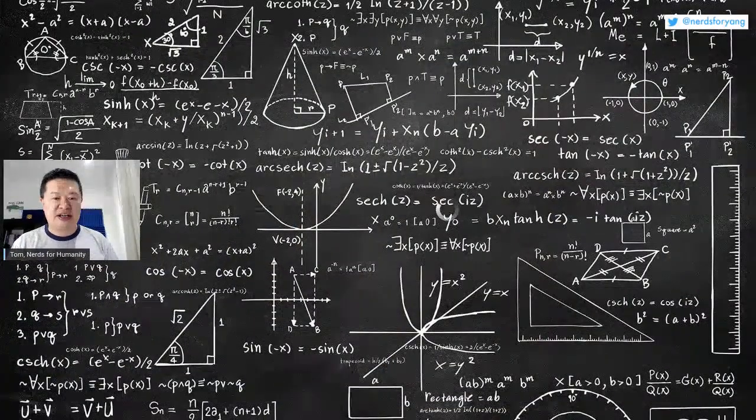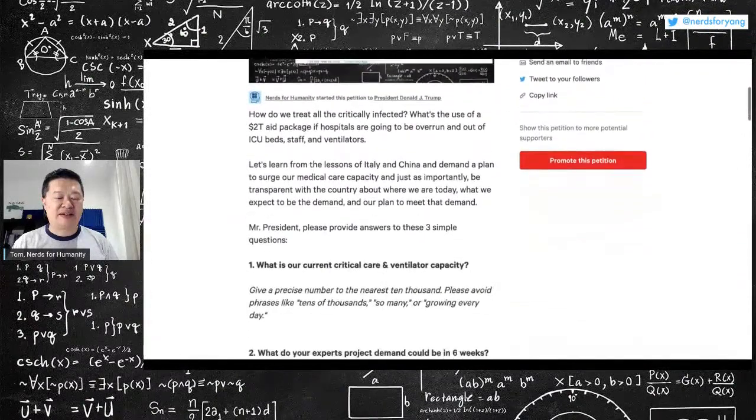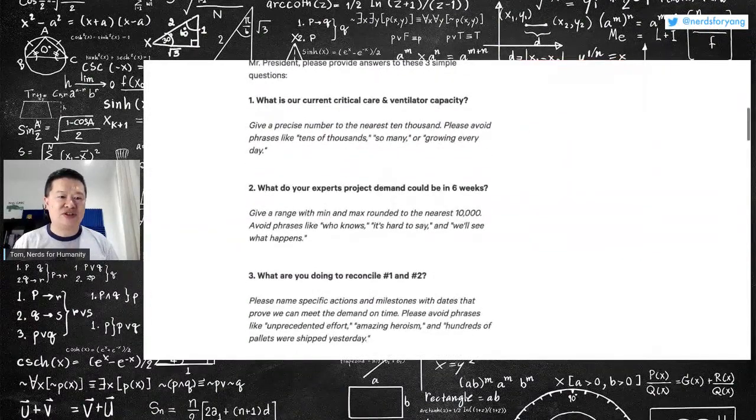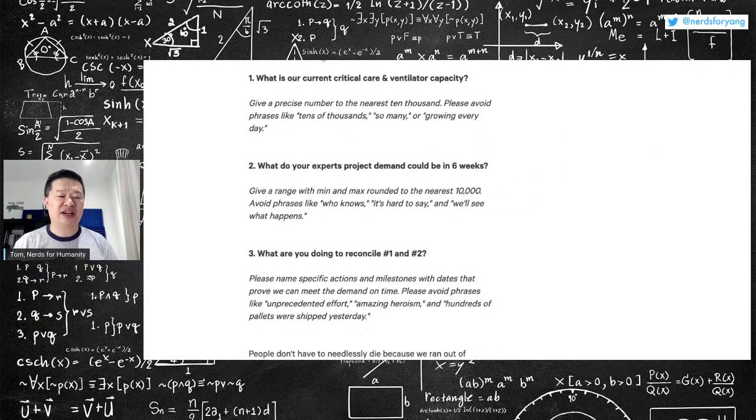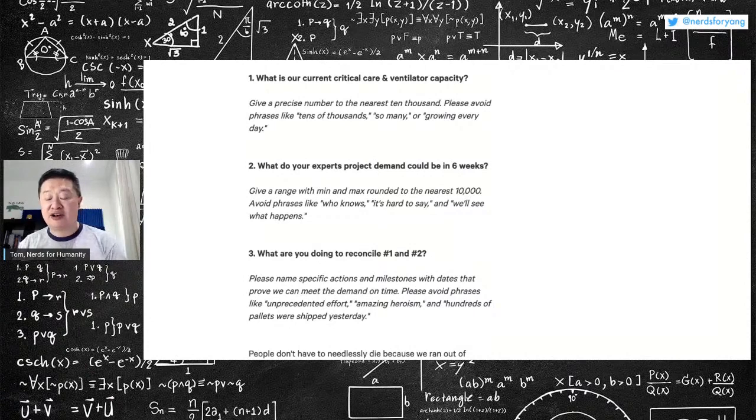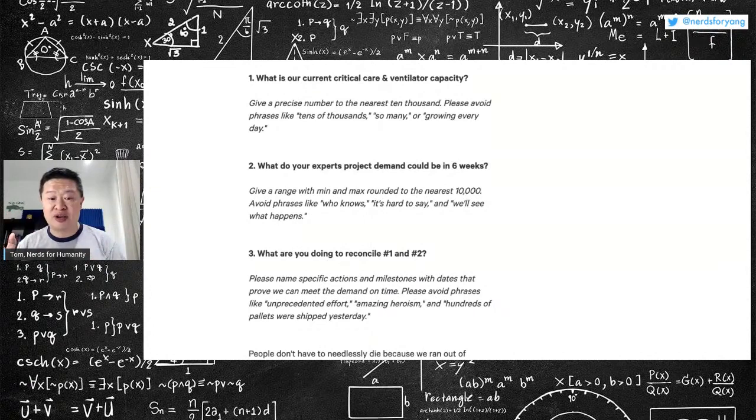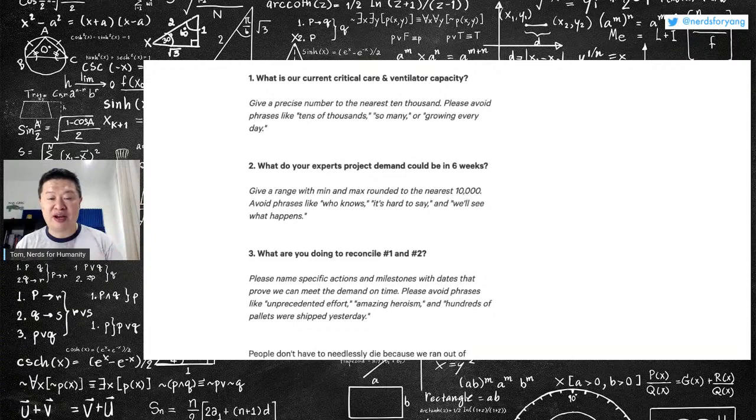So this gets me to a petition that if you haven't signed, I want to encourage you to consider it. It's on change.org. And basically, I am trying to get the answers to these three very simple questions. Number one, what is our current ICU and ventilator capacity nationally? What do we project will be the demand in six weeks? And what are we going to do to reconcile number one and number two, please provide milestones and measurable outcomes?